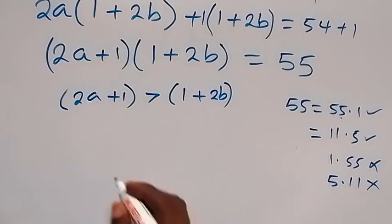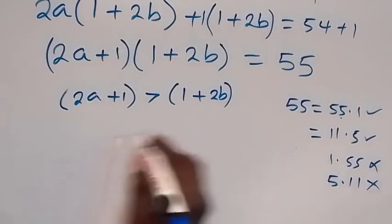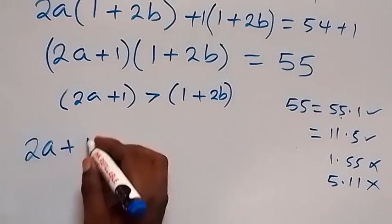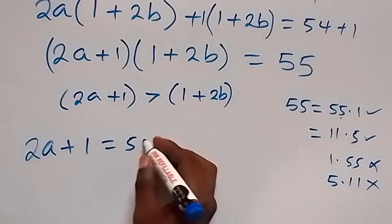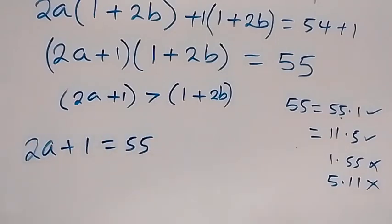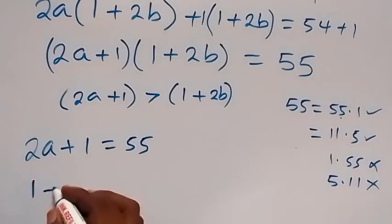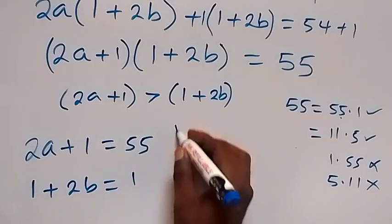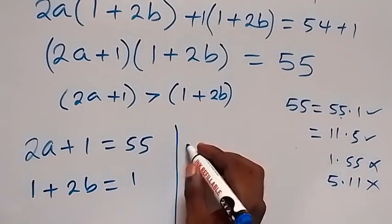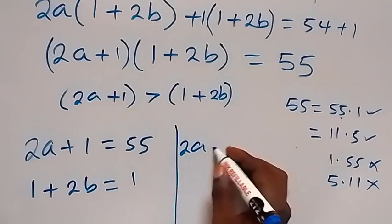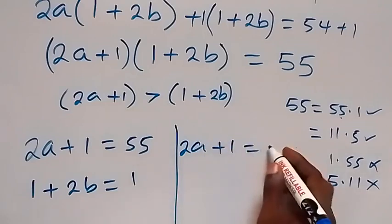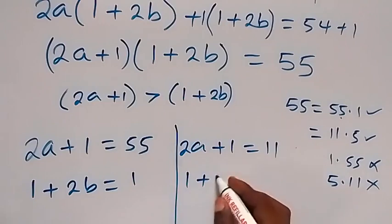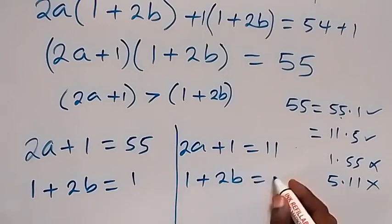We have two cases: Case 1 — 2a plus 1 equals 55 and 1 plus 2b equals 1. Case 2 — 2a plus 1 equals 11 and 1 plus 2b equals 5.